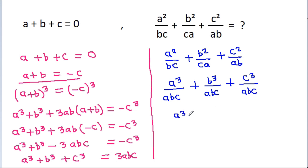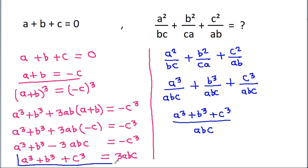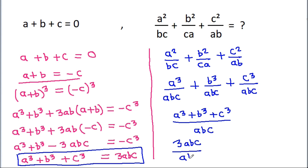And since A cubed plus B cubed plus C cubed equals 3ABC, we substitute to get 3ABC divided by ABC. The ABC cancels, giving us the final answer of 3. Thank you.